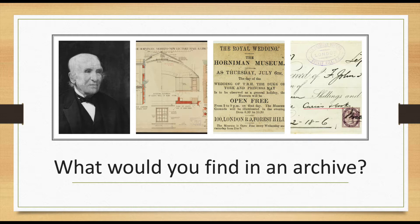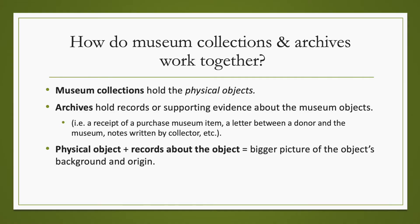These records will have supporting evidence or written information about a museum object. Some examples include an object's receipt if it was purchased, a letter between the donor and the museum, or an annual report stating the museum's activities for a given year. So, how do the two work together? When you are searching through a museum collection, you will find objects, and if proper research has been conducted for that object,